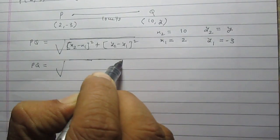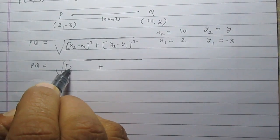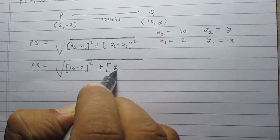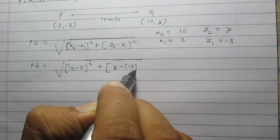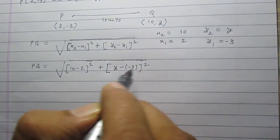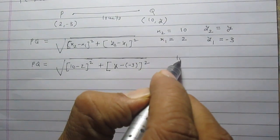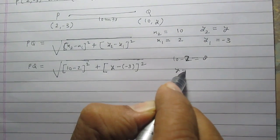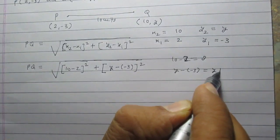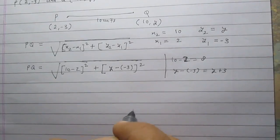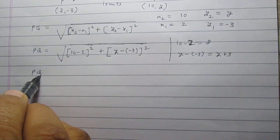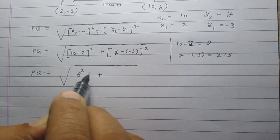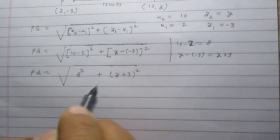After substituting these values into the formula, we get PQ = √[(10 - 2)² + (y - (-3))²]. Now, 10 - 2 equals 8, and y - (-3) equals y + 3. So we can write PQ as the square root of 8² + (y + 3)².